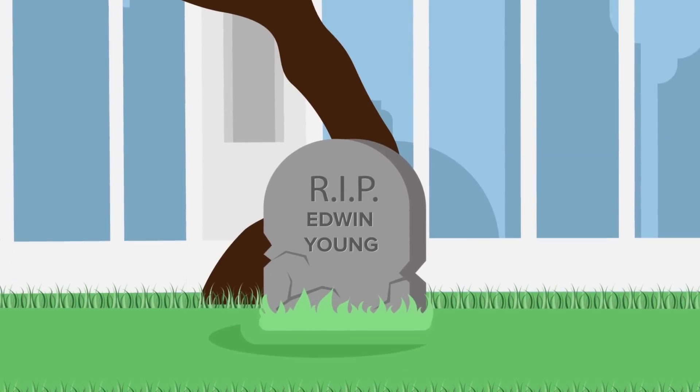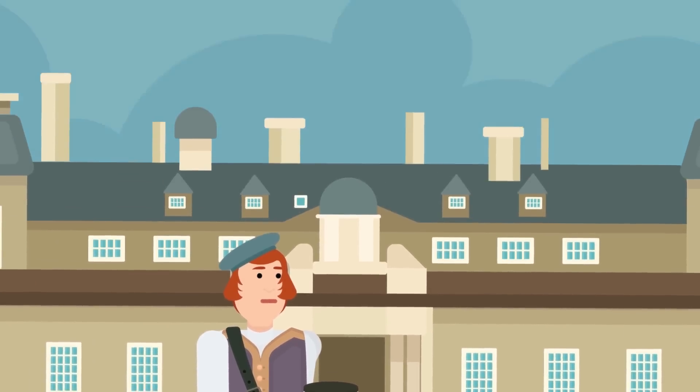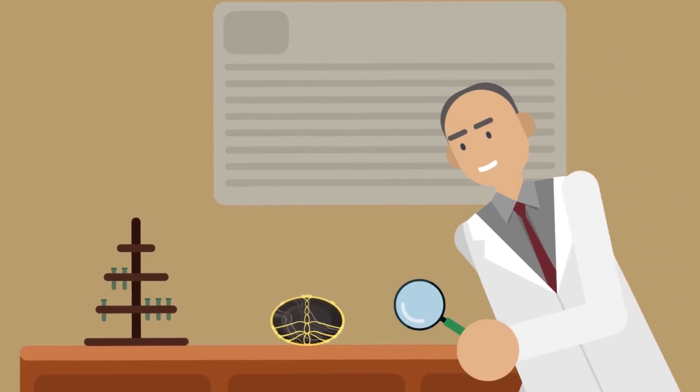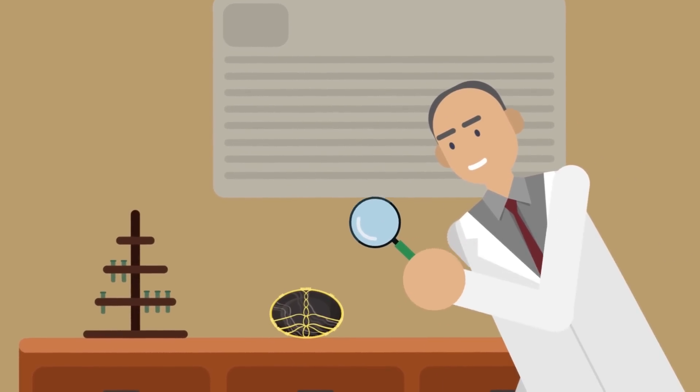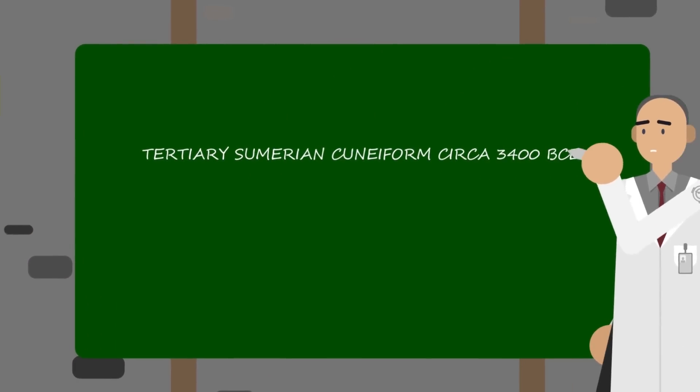After Young's death, his descendants donated his collection to the Scottish National Museum. There, a curator named Mr. McCandlish was able to translate runic sketches in Young's notes, documents identified as tertiary Sumerian cuneiform circa 3400 BCE.